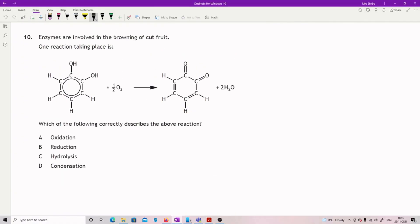Okay, enzymes are involved in the browning of cut fruit. One reaction taking place is - which of the following correctly describes the above reaction? What have we done here? We have added in oxygen and in doing that we have increased the oxygen to hydrogen ratio, because we have changed this from C6H6O2 to C6H4O2. Overall we now have more oxygens relative to hydrogen. That is an oxidation. If we'd done the opposite that would have been reduction. Hydrolysis would have been breaking it into smaller sections, which we're not doing. And we're not joining it to something else while removing a small molecule, which would have been condensation.